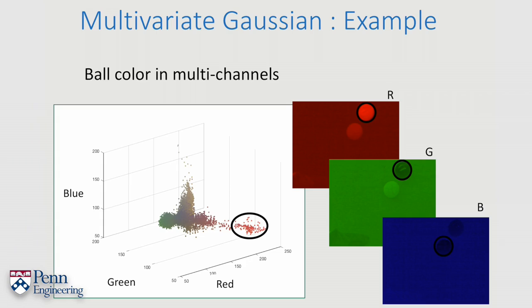Now we are interested in modeling the color of the red ball using all of the RGB channels. Let's talk about how a Gaussian distribution works in this case.